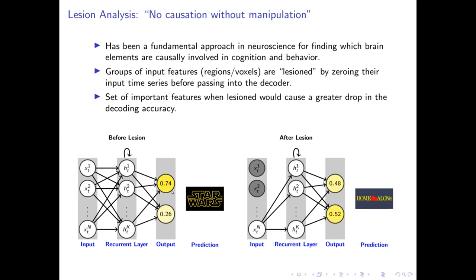The key idea is that a set of important features when lesioned would cause a greater drop in decoding accuracy. In this figure, we lesion the first two regions highlighted in grey. This lowers the Star Wars score from 0.74 to 0.48 and therefore alters the final prediction. This indicates the importance of those regions for predicting Star Wars.